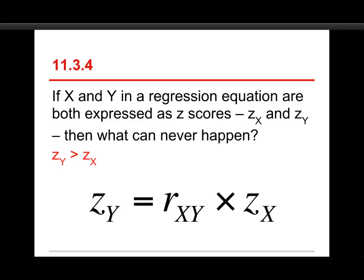Now, this is only for standardized scores, for Z scores. If you're using raw scores, you know, obviously, if they're on different scales, you can have bigger things. But if they're standardized, then the Z score for Y can never be greater than the Z score for X, because the correlations are never greater than positive 1 or less than negative 1. In fact, they're usually smaller and closer to 0.